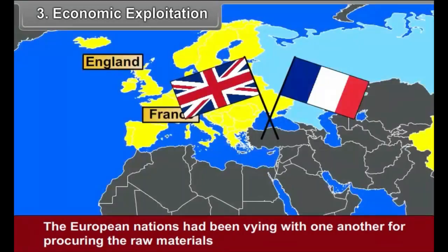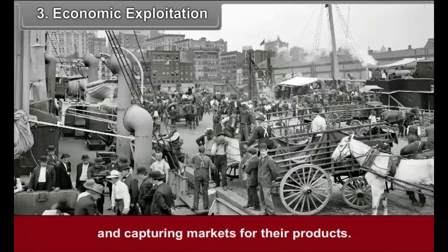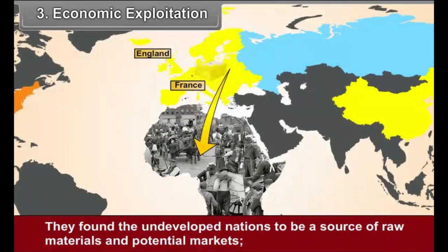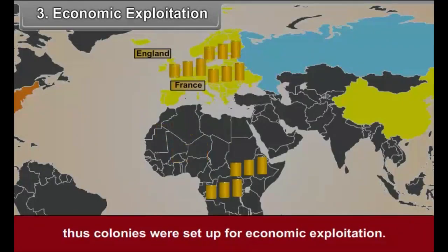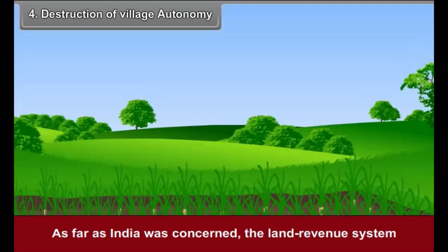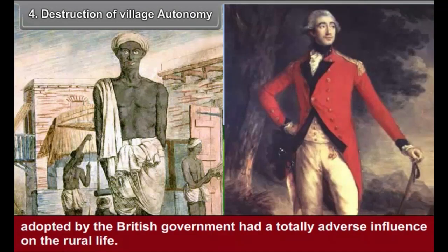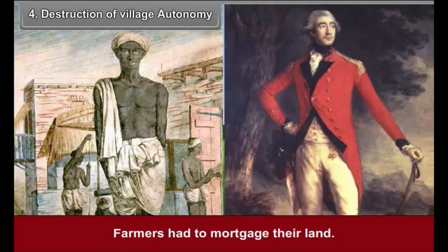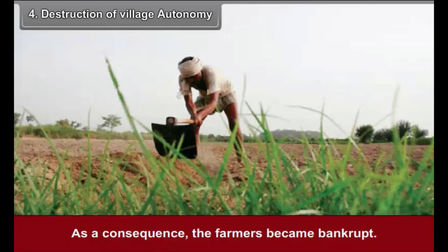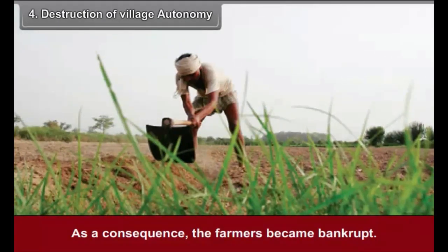Third, economic exploitation: the European nations vied with one another for procuring raw materials and capturing markets for their products. They found undeveloped nations to be a source of raw materials and potential markets, and thus colonies were set up for economic exploitation. Fourth, destruction of village autonomy: as far as India was concerned, the land revenue system adopted by the British government had a totally adverse influence on rural life. Farmers had to mortgage their land and give it away instead of money to pay taxes to the white government. As a consequence, farmers became bankrupt. Goods exported to England were taxed, villages lost their self-reliance, and Indian industries were closed down, making workers jobless.